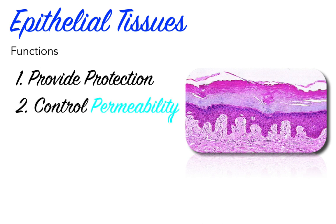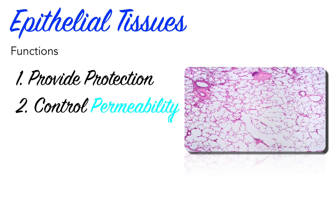Second, epithelial tissues control permeability. Any substance that enters or leaves the body must cross an epithelium — whether that is water moving through the epithelia of your skin, or a nutrient being absorbed across the lining of your small intestines. Some epithelia are relatively impermeable, while others are easily crossed by compounds even as large as proteins.